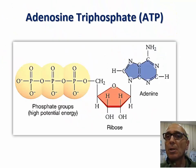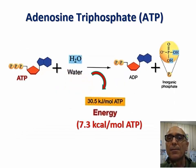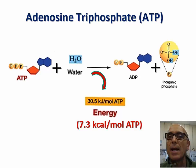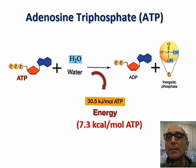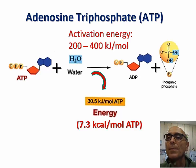ATP is a good short-term storage compound in cells due to two main factors. The first is that the hydrolysis of ATP is highly exergonic, releasing a large amount of energy. When ATP hydrolyzes, the outermost inorganic phosphate group is released, causing a negative charge to separate from the molecule, thus lowering the energy level in the product. Second, ATP does not spontaneously hydrolyze, as it requires large activation energy to do so.